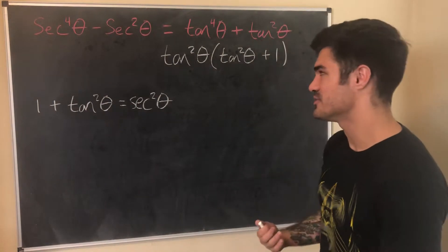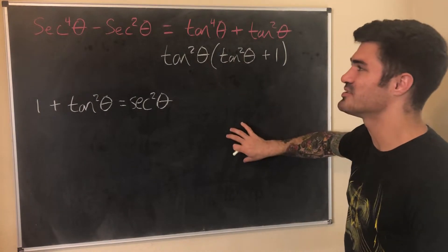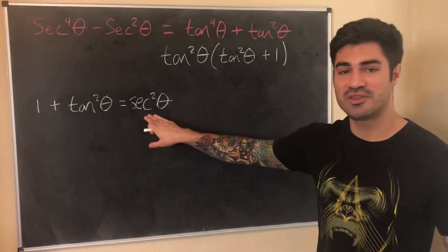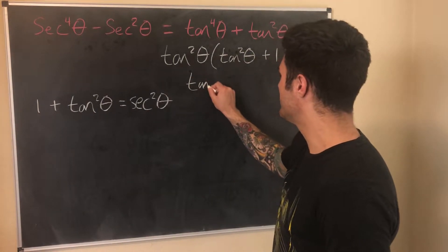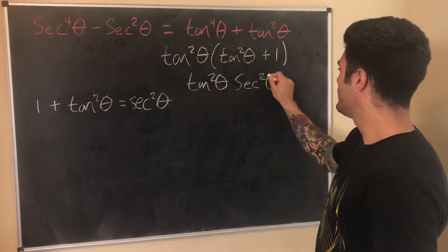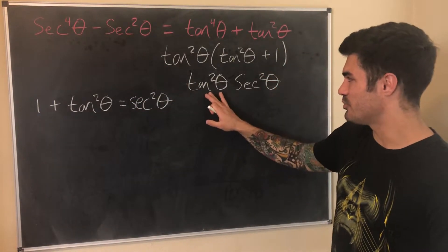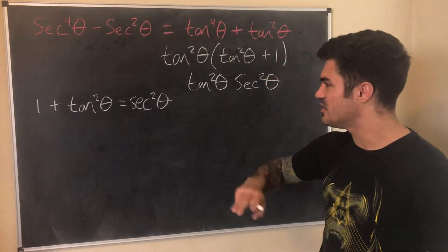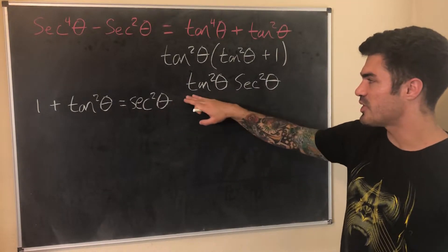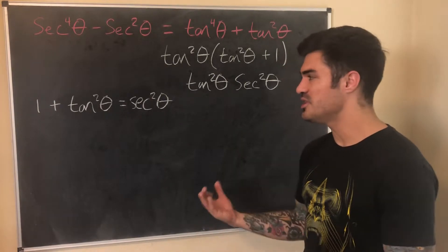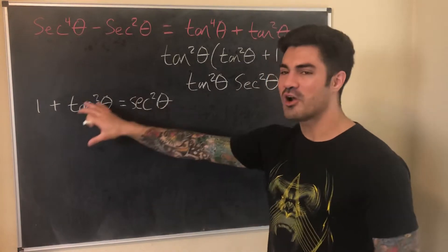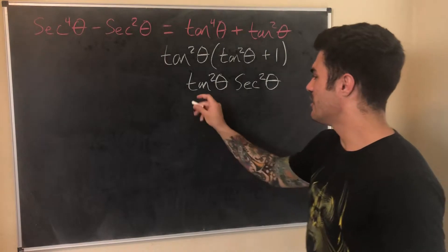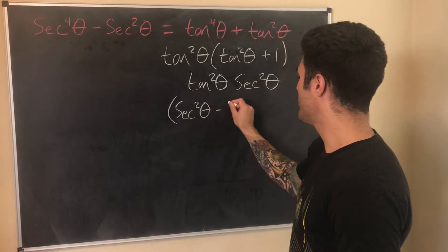Make sure what you're doing aligns with where you want to end up. We can replace tan²θ + 1 directly with sec²θ, leaving us with tan²θ · sec²θ. Now we want everything in terms of secant, so we replace tan²θ as well. From 1 + tan²θ = sec²θ, subtracting one from both sides gives tan²θ = sec²θ − 1. So I replace tan²θ with sec²θ − 1. There's no shame in writing out identities off to the side as scratch work — I still do it today.